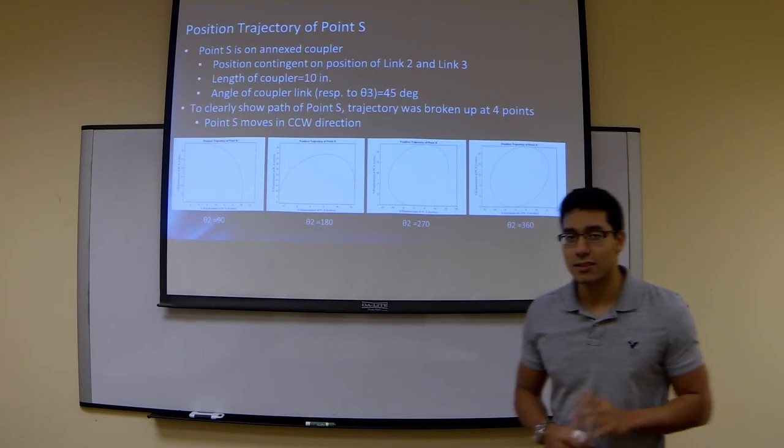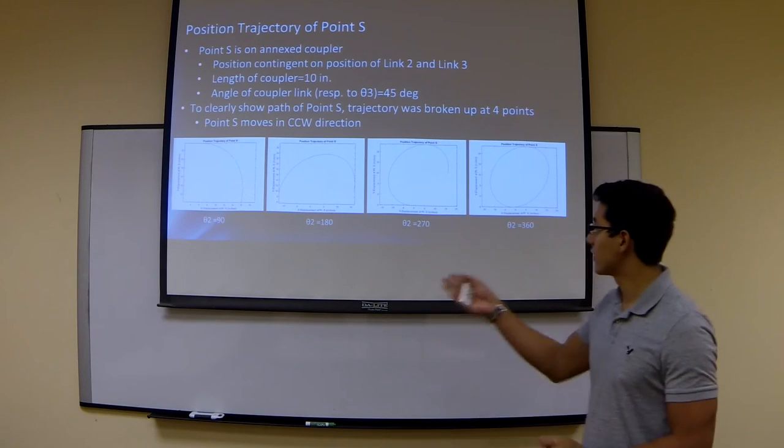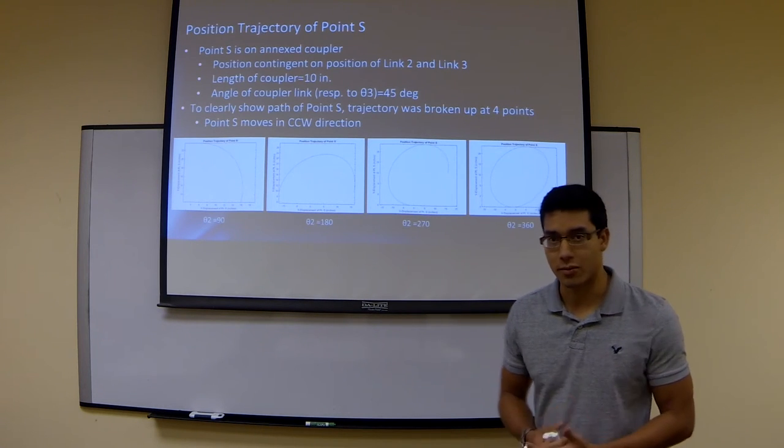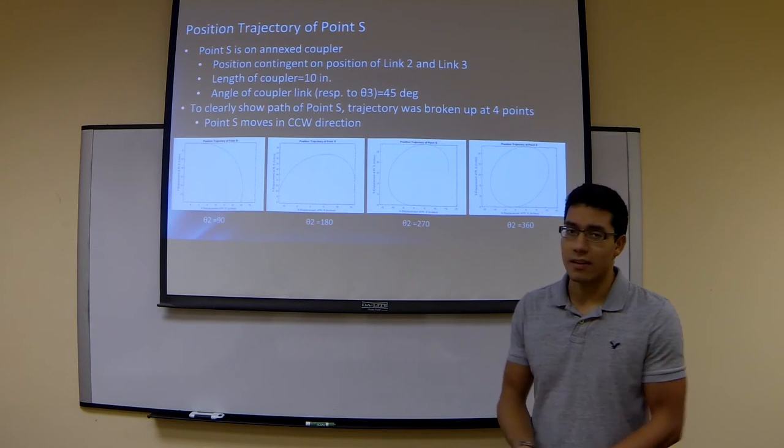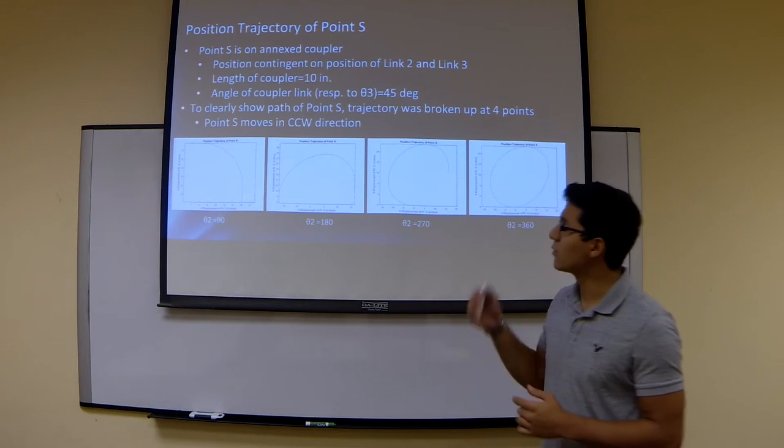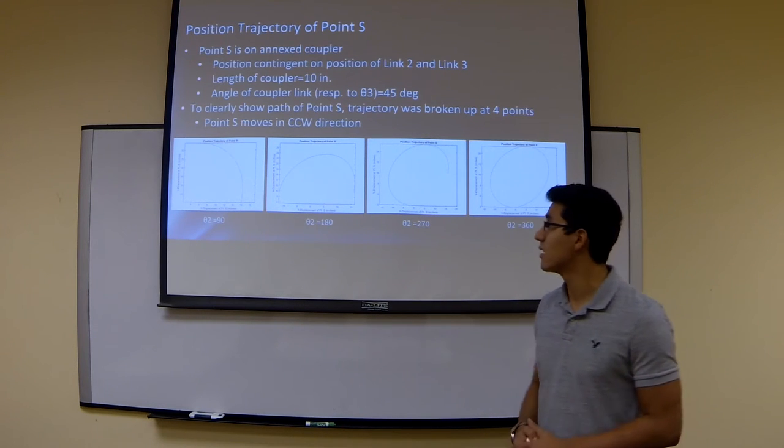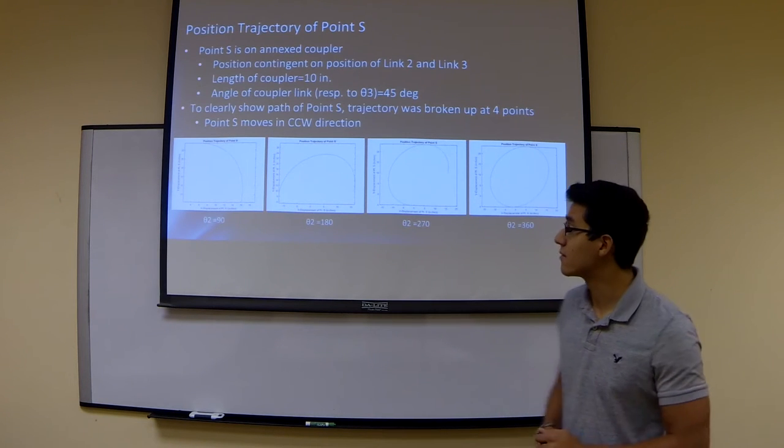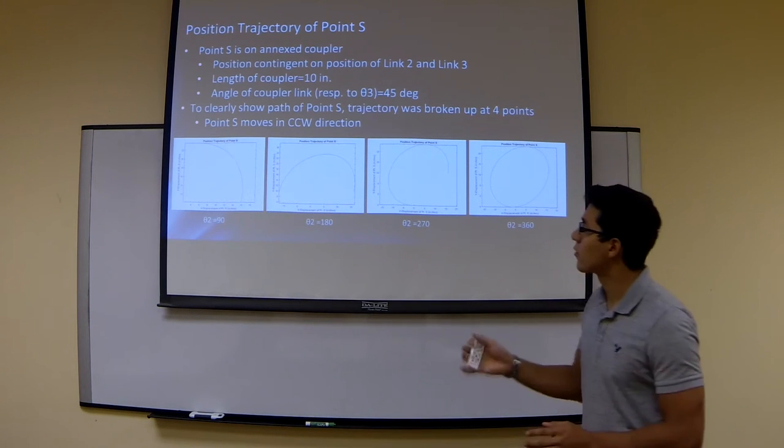So when we take a look at the position trajectory of point S, we take a look at these four plots that we developed in order to see the actual trajectory of the point, rather than just show the value of the displacement as a function of time. We were given the length of the coupler to be 10 inches, and the angle of the coupler link was arbitrarily chosen at 45 degrees.